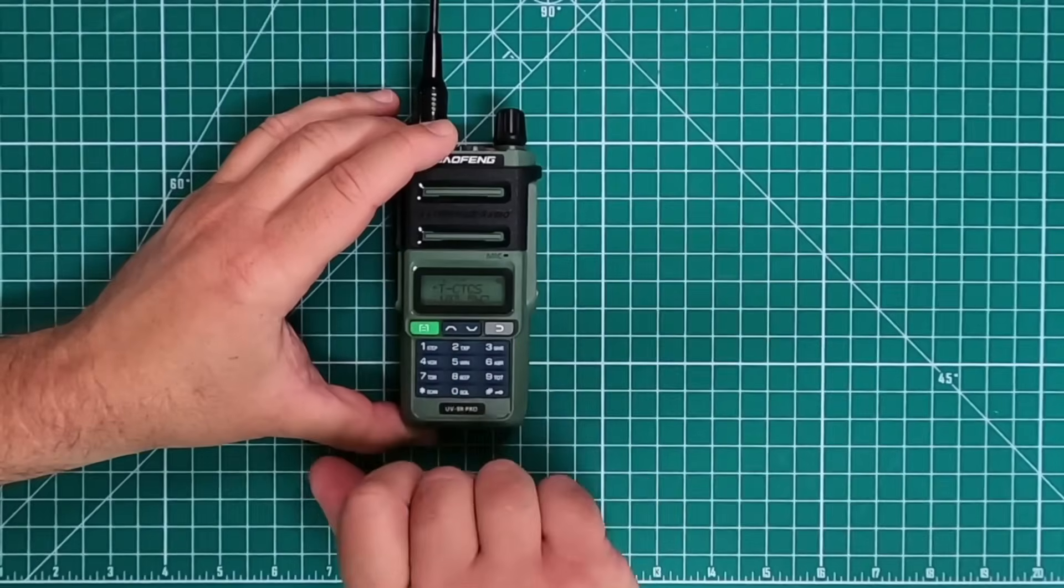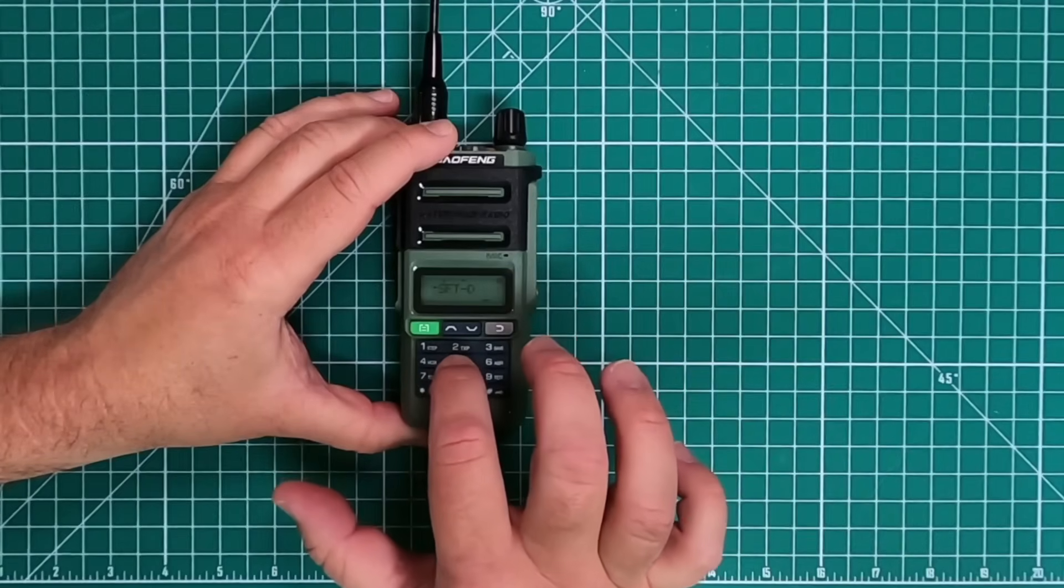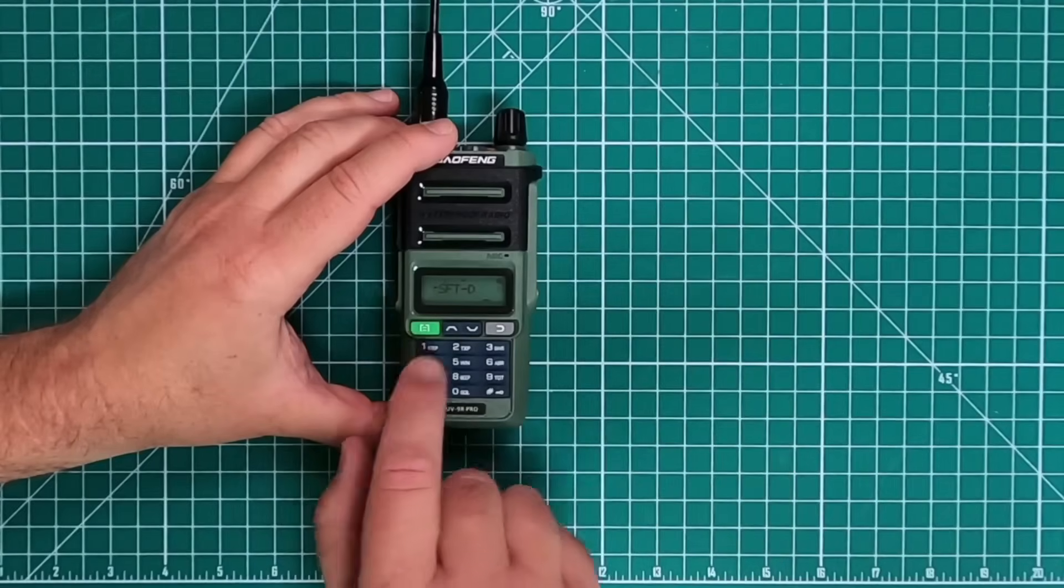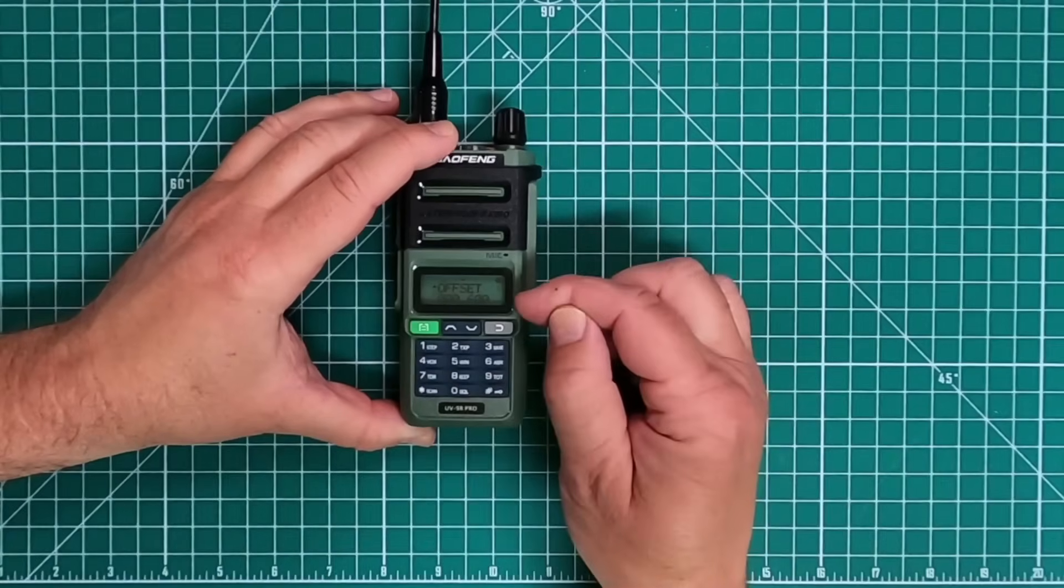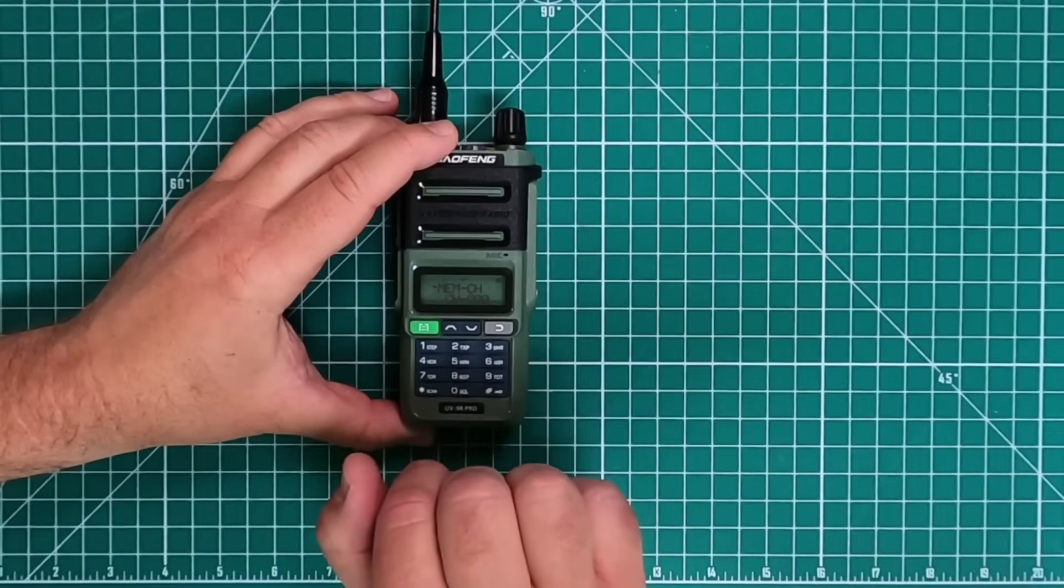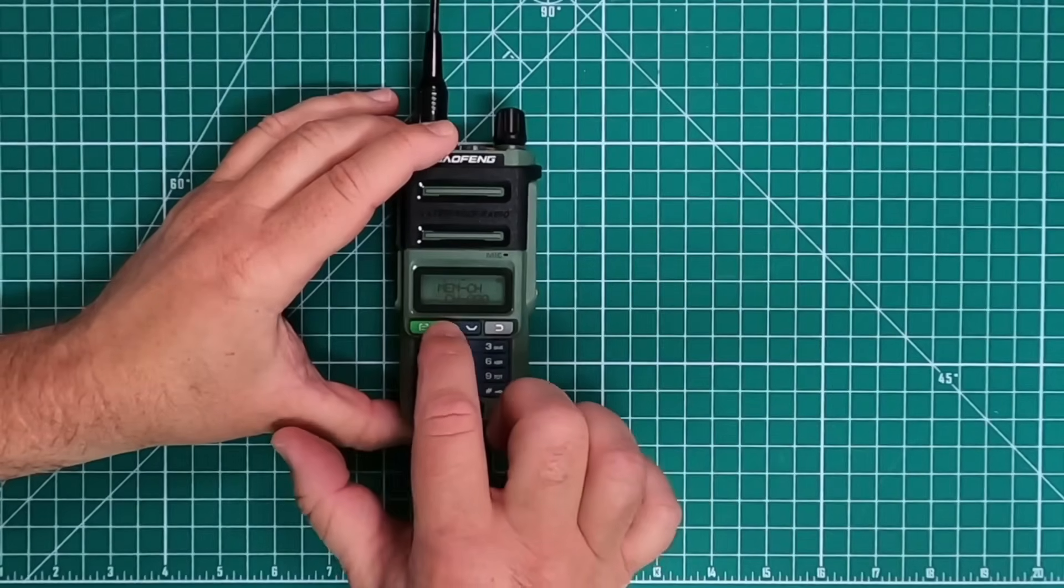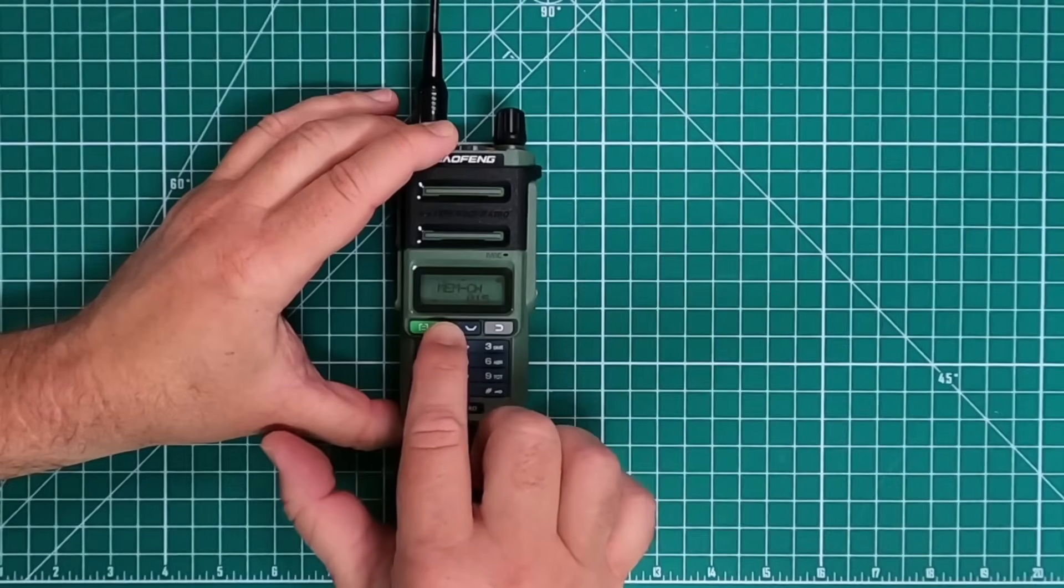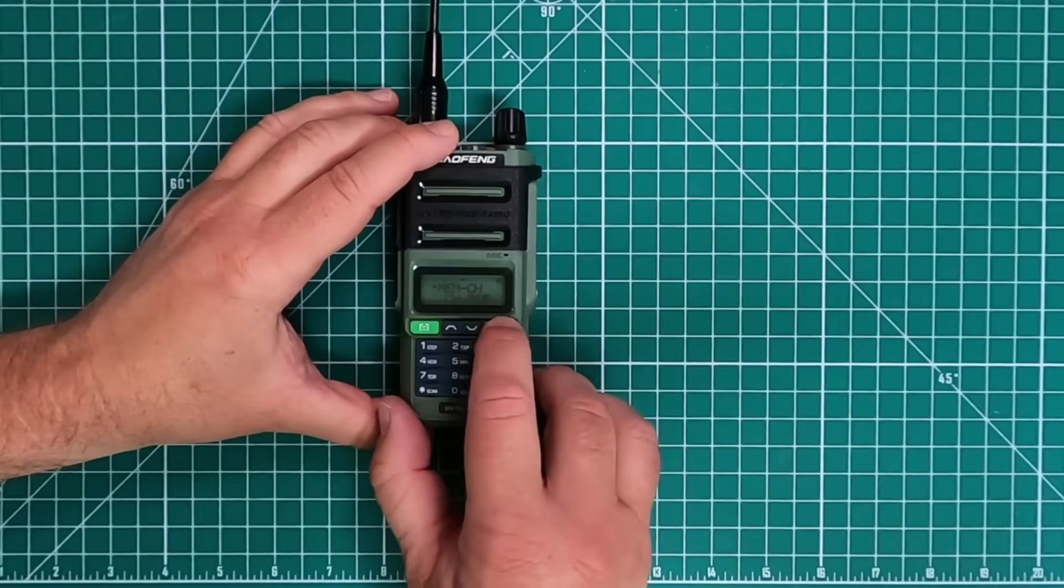Once you have it, press the menu again to lock it in. Next menu item, 25 to choose your direction. And we want a negative, which we're already at. Then we're going to go to menu number 26. We already have the 0.6 for the offset. Then we're going to go to pick our memory slot. And we're going to use 15. And press and hold to get it there. Once you have the one you want, press and hold the menu to lock it in. And then exit out.